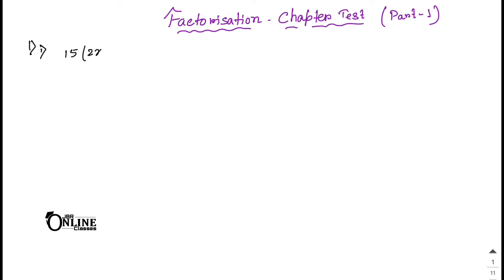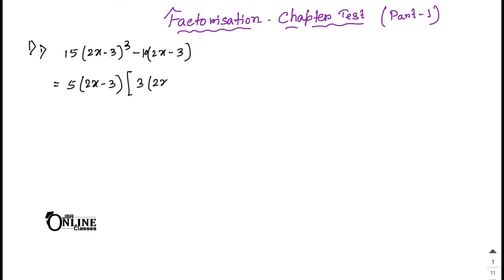Problem number 1: 15 into (2x minus 3) whole cube, minus 10 into (2x minus 3). You can take out 5 and (2x minus 3) as common factors. Taking out 5 gives 3, since 5 times 3 is 15, leaving (2x minus 3) whole square, and the second term gives minus 2.